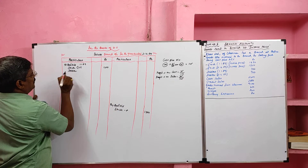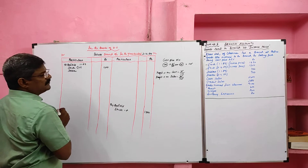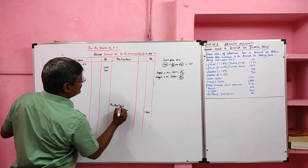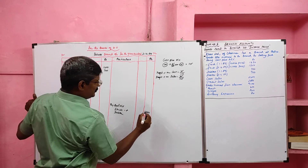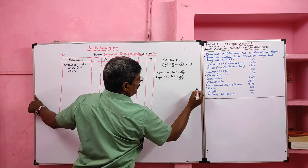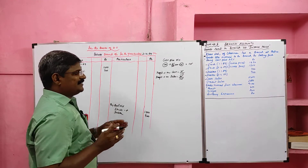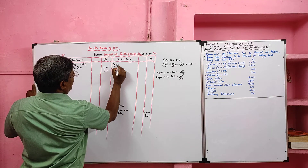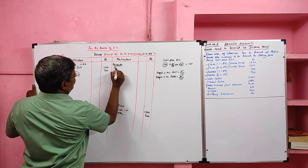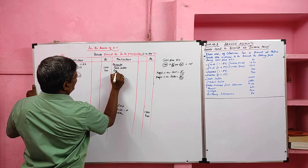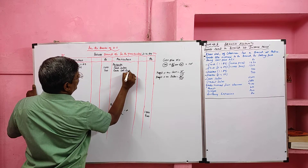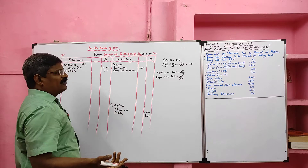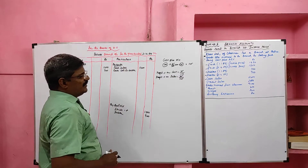Opening debtors are debited to the branch account under balance b/d, value 700. Closing debtors are recorded under balance c/d on the credit side, value 900. Then cash sales and cash collected from debtors are added together and sent to the head office, recorded on the credit side as bank. Credit sales are not required for the branch account, only for the debtor account.